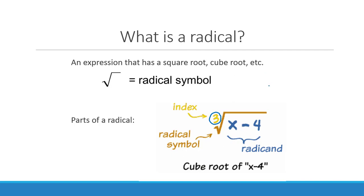If you just see a square root, there will never be a number written there, but it does have an understood index of 2. Keep in mind what square roots represent — that means something times itself would give you this number. If you had an index of 3, that means something times itself three times would give you whatever's inside the radical symbol.